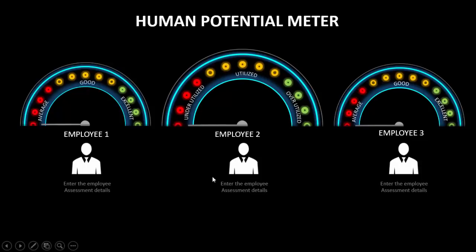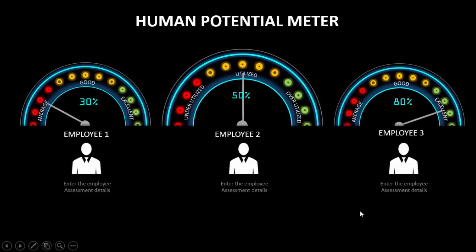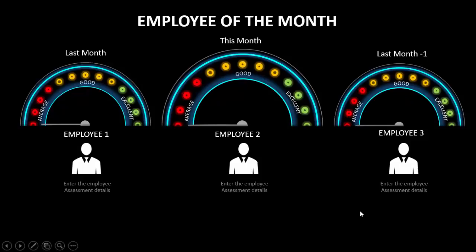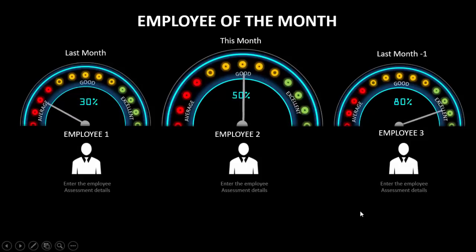Apart from that, you can use this to show something like a human potential meter — whether someone is under-utilized, over-utilized, or normally utilized. You can also use it as an employee of the month display, showing the current month as well as the previous month.